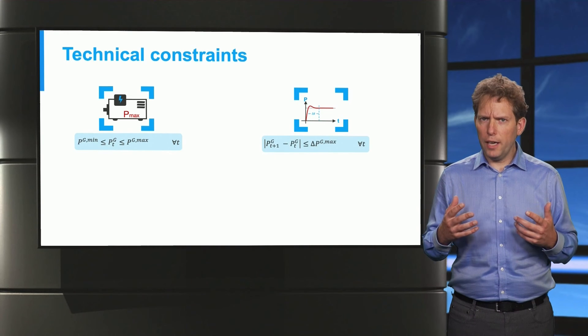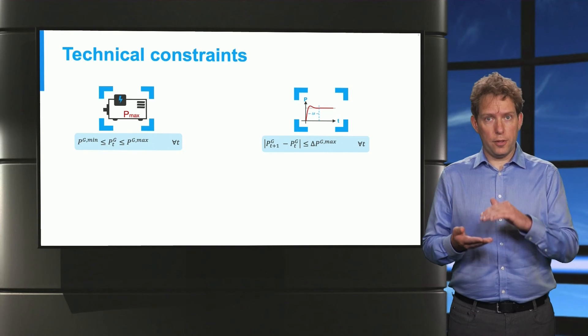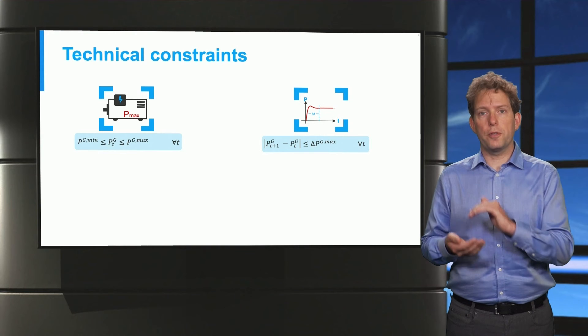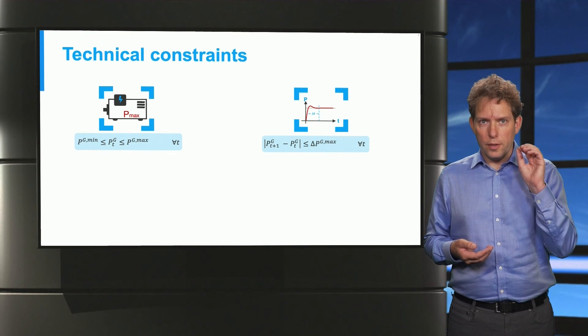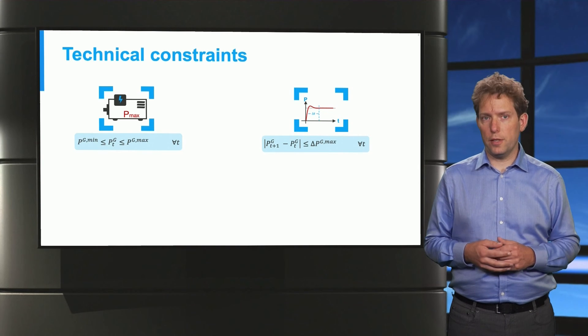And this constraint applies to all time steps in our dispatch decision. In addition, we have what's called a ramp constraint. It limits the difference that is permitted between the output power of a generator in two subsequent dispatch periods. So this reflects the technical constraint that it takes time to adjust this power generating process.